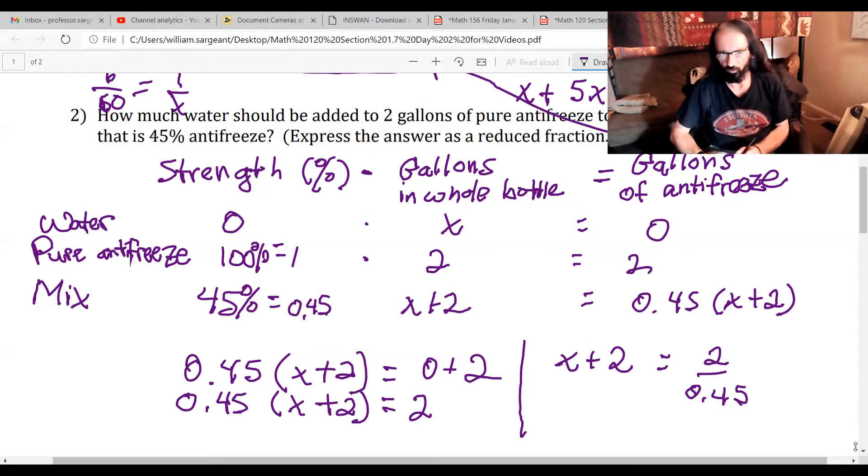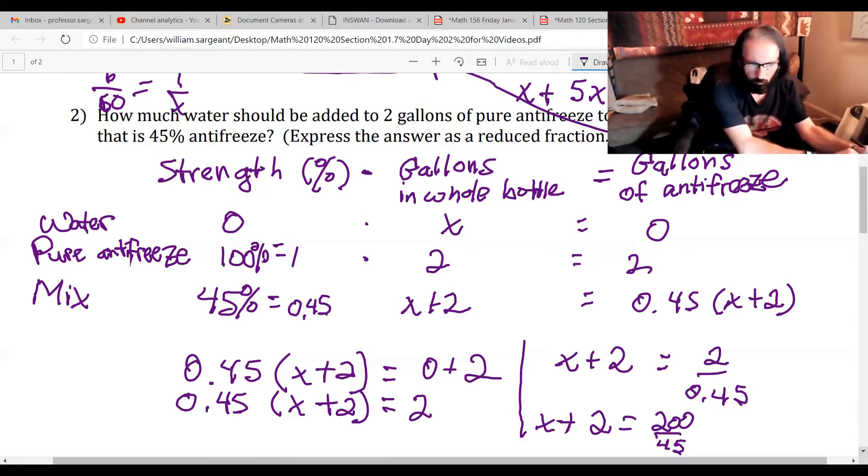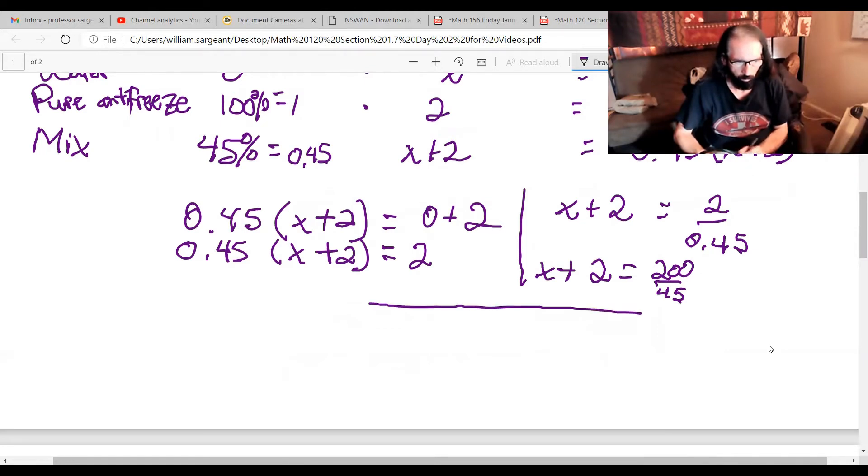Since we're supposed to express our answer as a reduced fraction not as a decimal, I want to know what the two over 0.45 is. I can multiply top and bottom by a hundred to get rid of the decimal. Five will go into both of those.